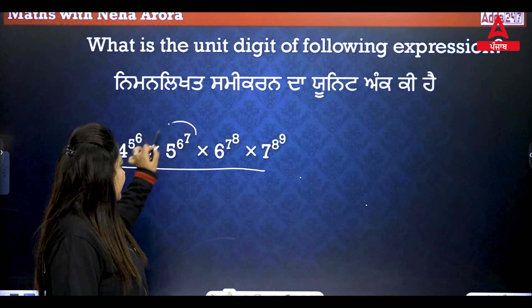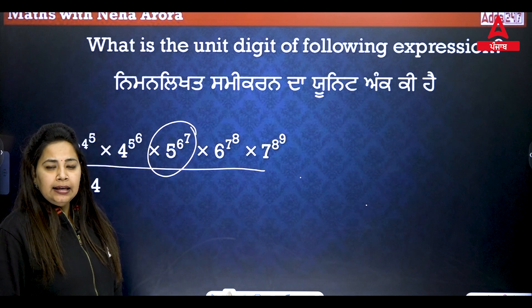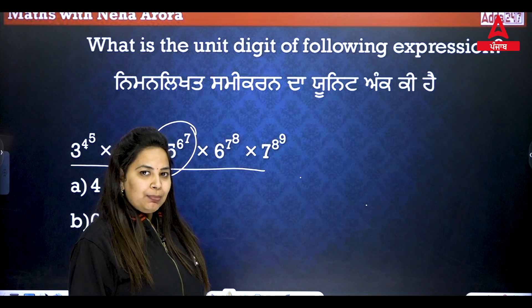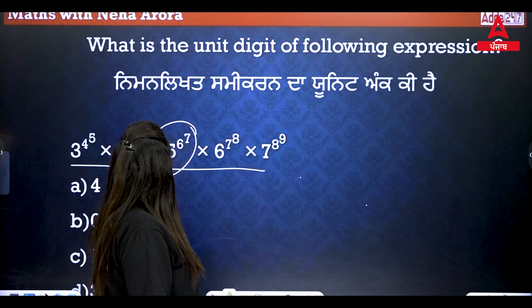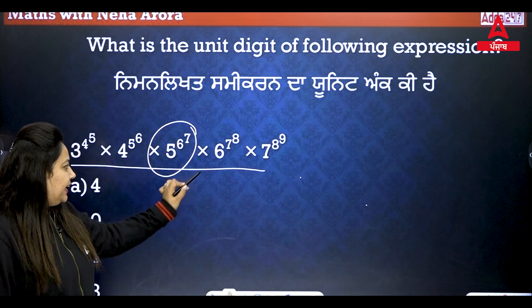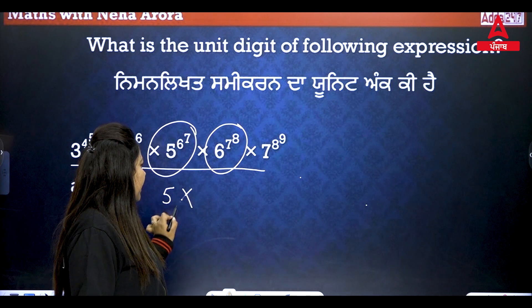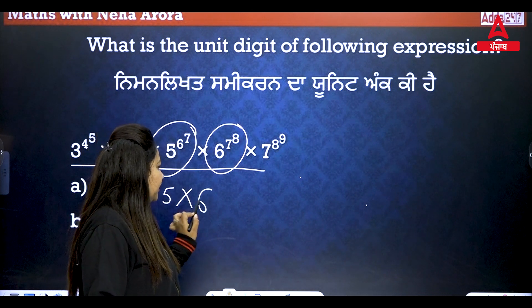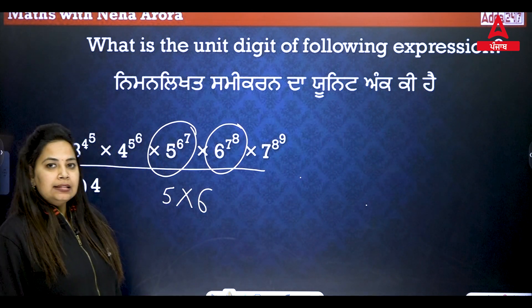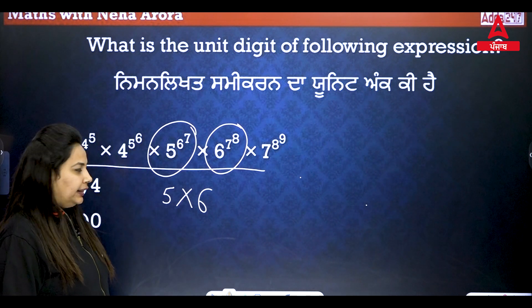Looking at this, with 5 power 6, it is clear that the unit digit of the power is 5. And the unit digit of 6 raised to a power is also 6. So when we do the same thing, the unit digit of the power is 3.